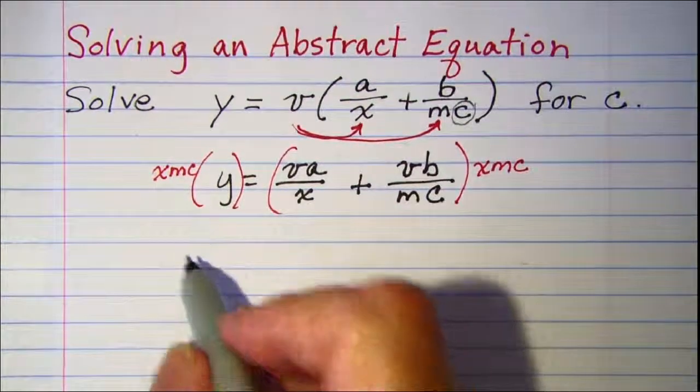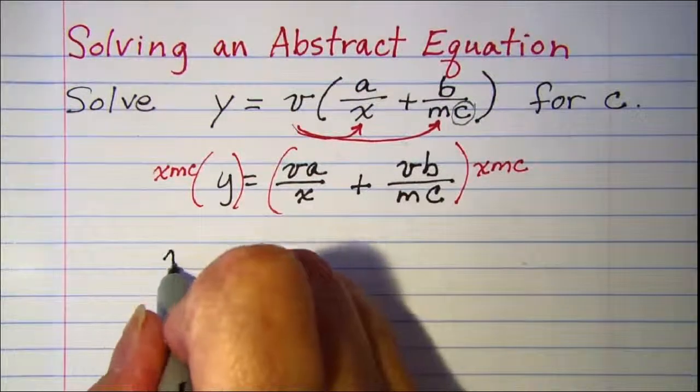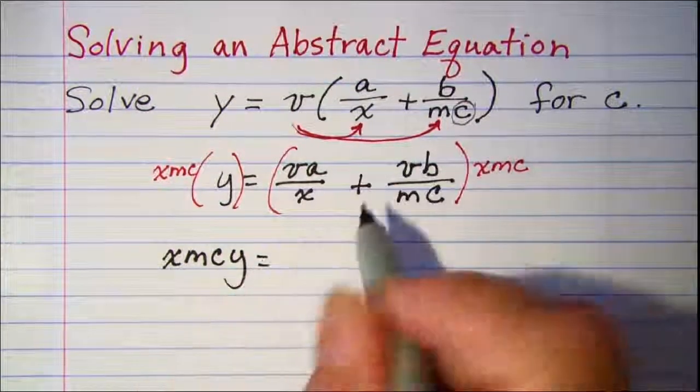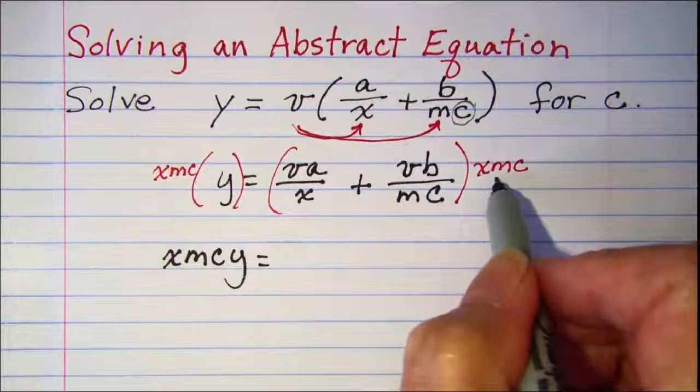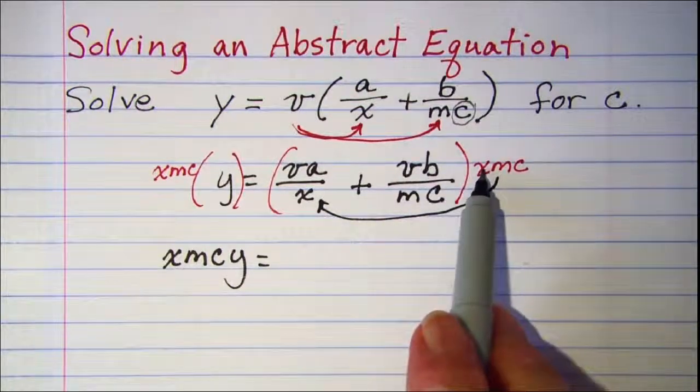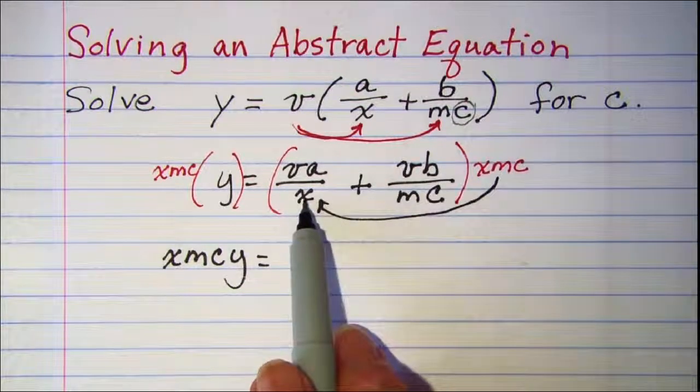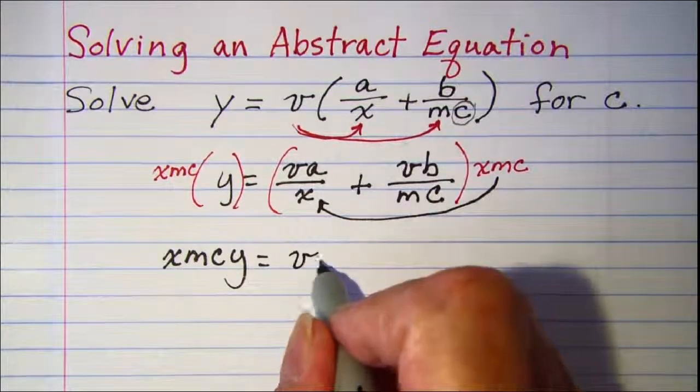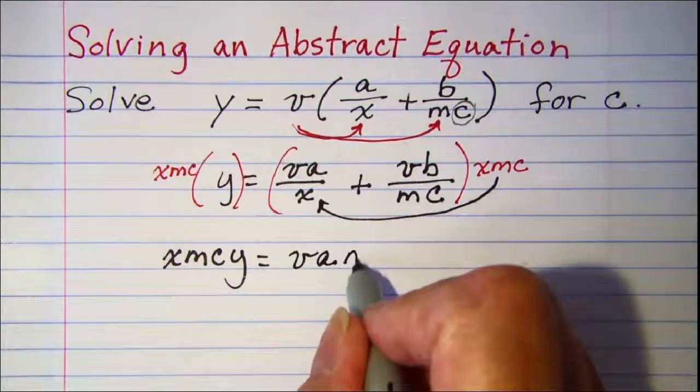On the left side I have xmcy. When I distribute xmc to the first term, the x's cancel since one is in the numerator and one is in the denominator, and I'll have vamc.